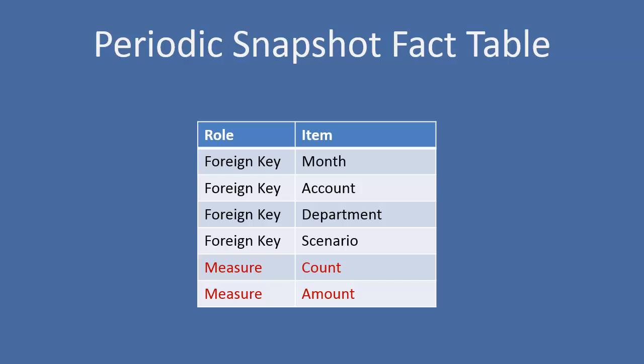Then I have an account for a measure and an amount. So I can easily query a fact table like this and pull out a value that would tell me what was my balance in this account for this month, for example.